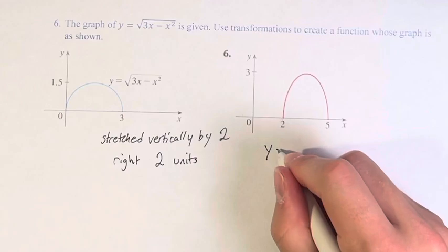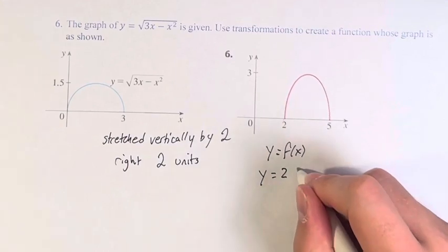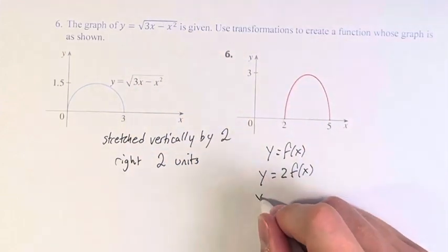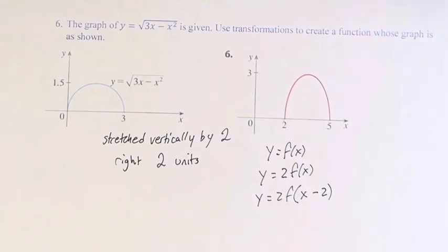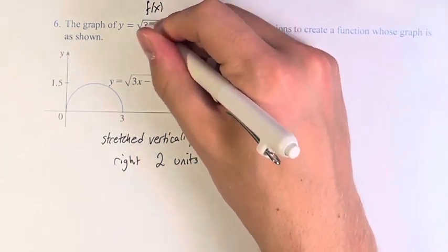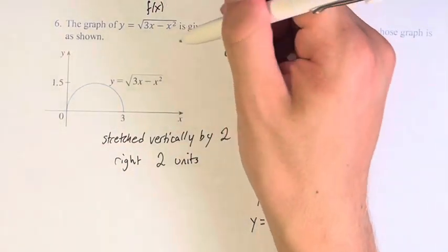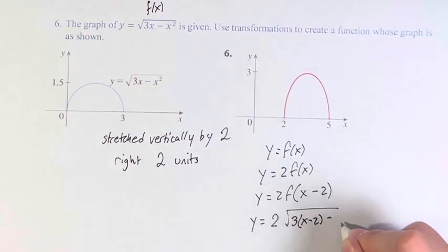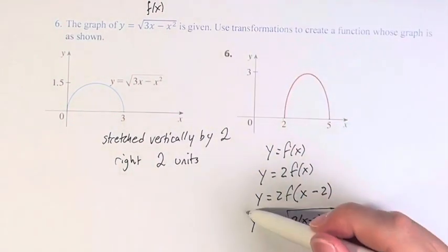So this here is y equals f of x. The vertical stretch by a factor of 2 makes it y equals 2 times f of x. And going to the right 2 units means it becomes f of x minus 2. However, it's not just f, right? This here is f of x, the square root of 3x minus x squared. So this is y is equal to 2 times the square root of 3 times x minus 2, minus x minus 2 squared. This is your new function with the given transformations.